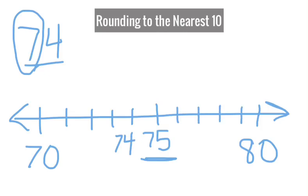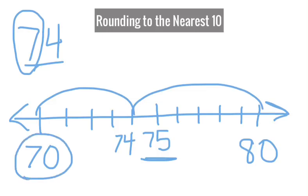Then I draw my jumps — a jump to seventy and a jump to eighty — and I notice the jump to seventy is closest. Rounding means the closest to, so I know seventy-four rounded to the nearest ten is seventy.